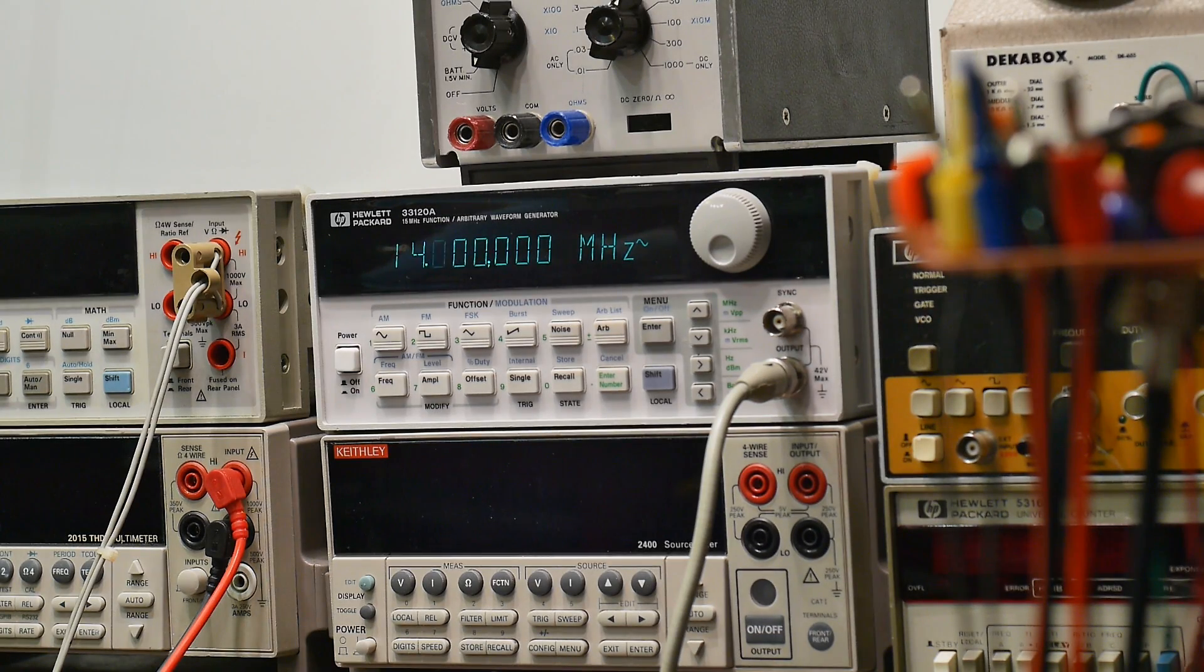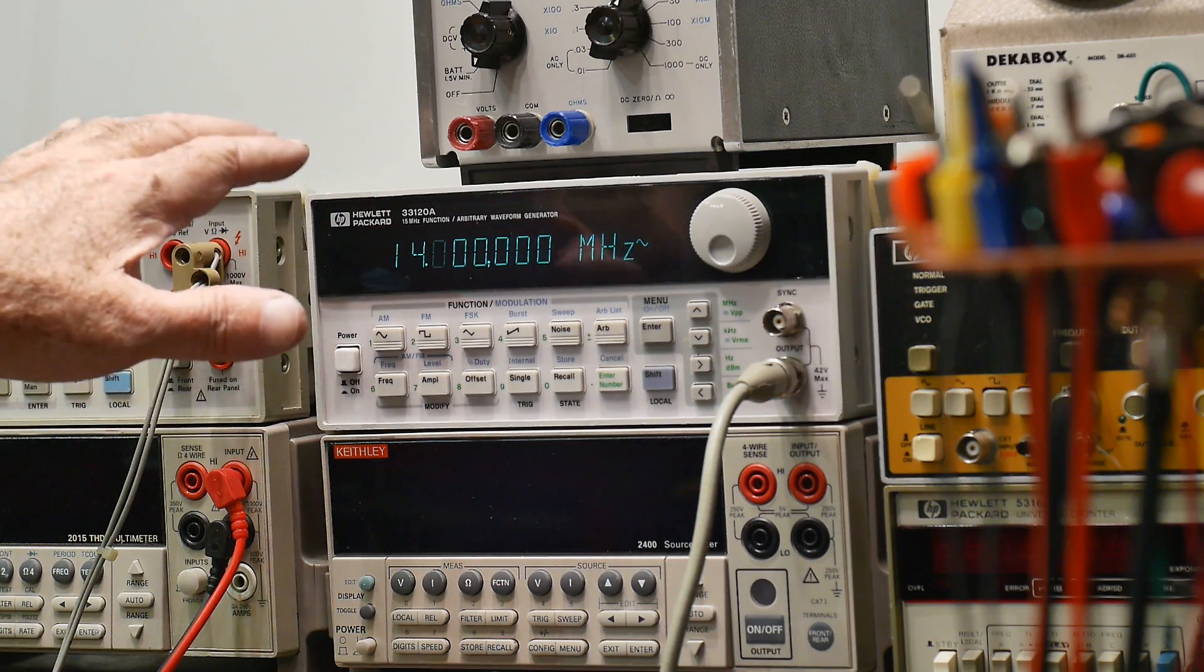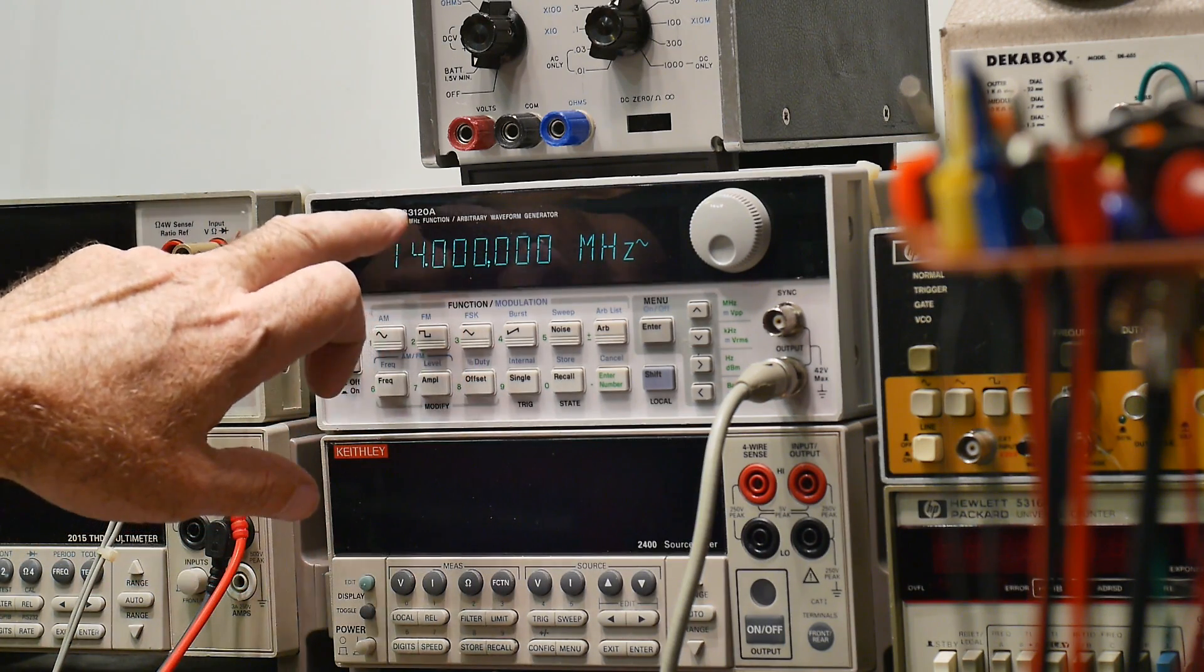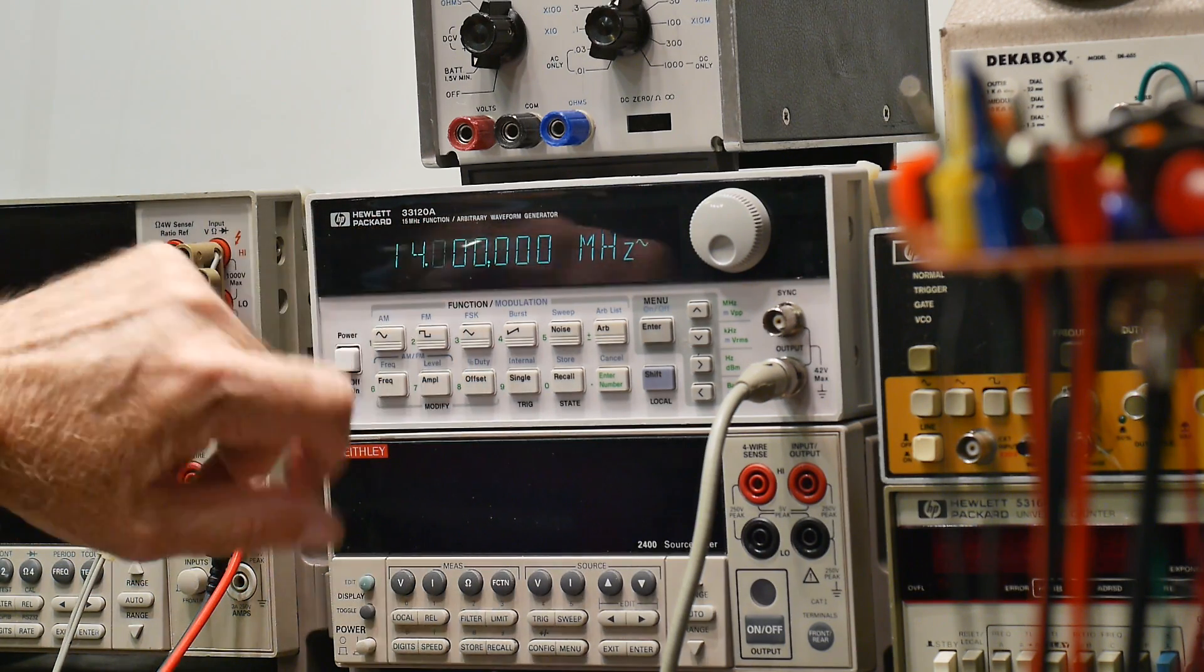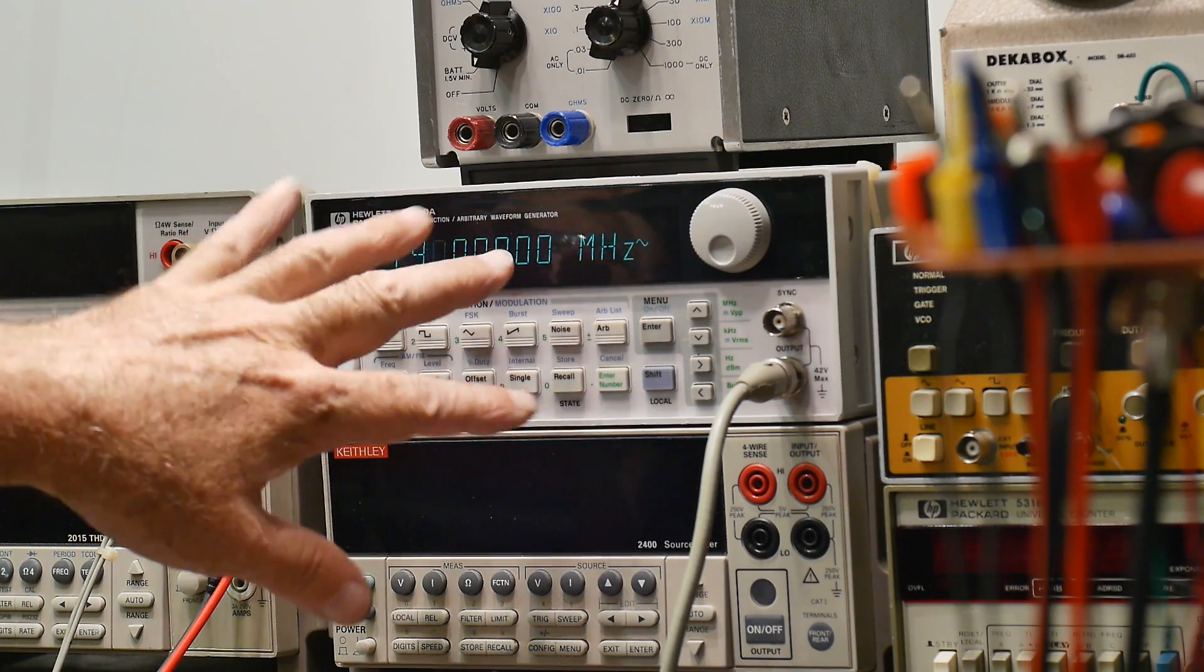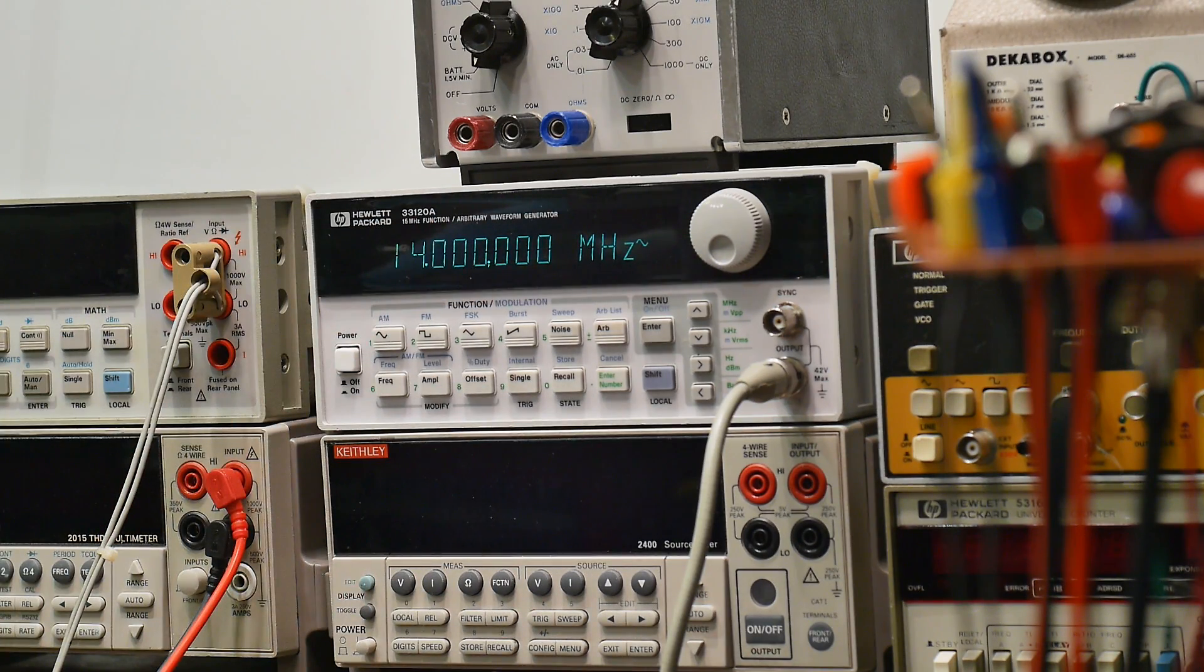For this first test we're going to use this generator. It is a HP 33120 arbitrary function generator. It only goes up to 15 megahertz but we're going to use it at 14 megahertz like a 20 meter band ham radio. So 14 megahertz and we're going to set the output power level at zero dBm.